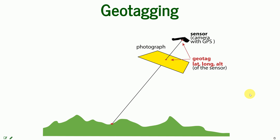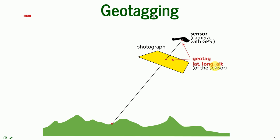So the geotagging is assigning the geotag — the position of the sensor of the camera — within the picture. You can see that this point on the ground is seen on the photograph at a specific place, and it is assigned a latitude, longitude, and altitude.